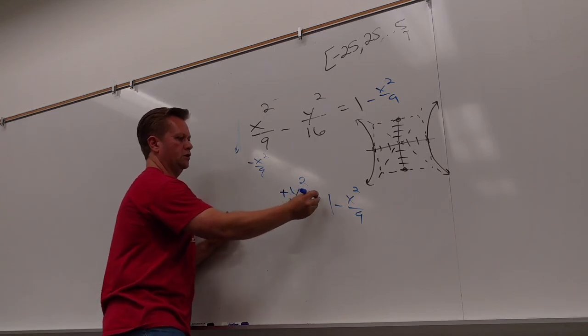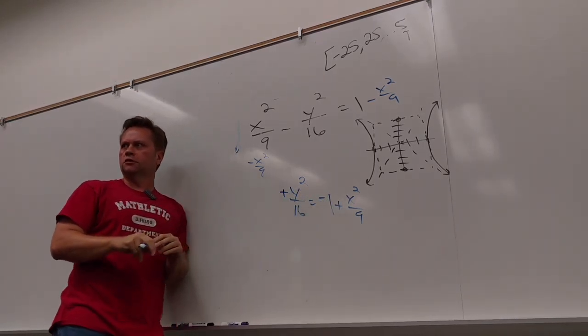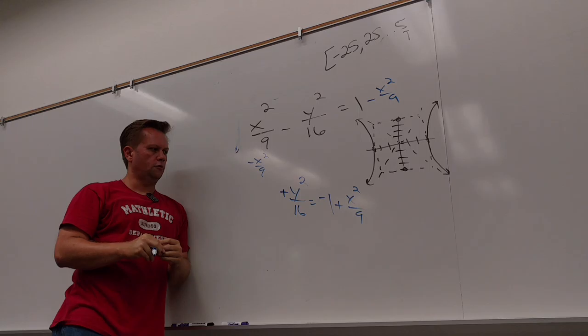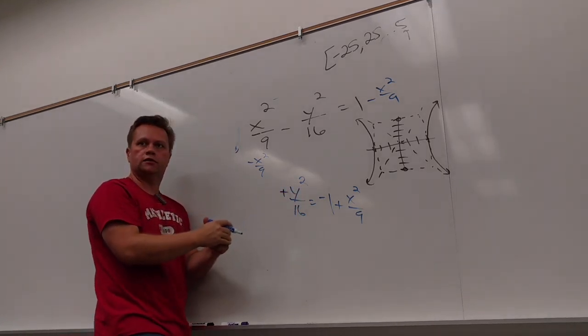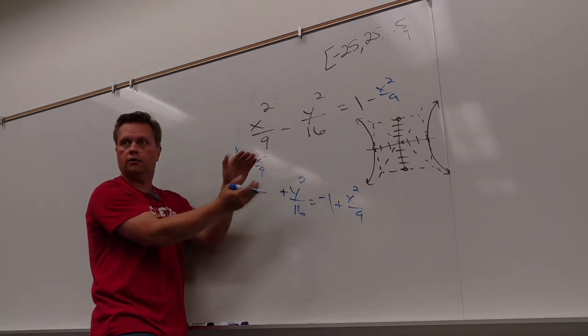So then I get negative y squared over 16. All right, divided by negative 1. I like it, so that changes the sign. What else is there you don't want there? Right now, you could do what to both sides? Now you've got one term here.